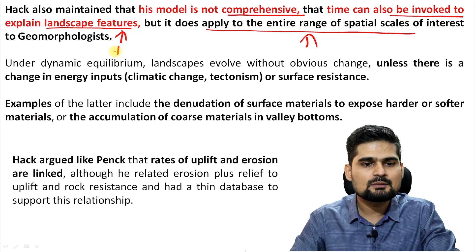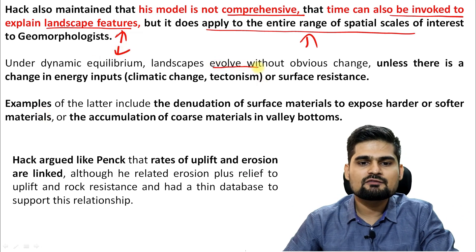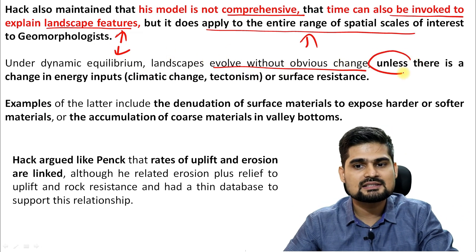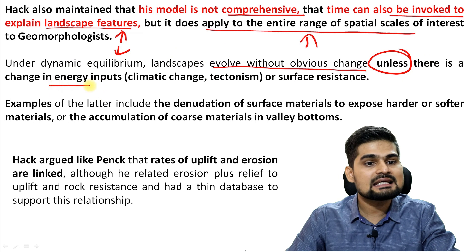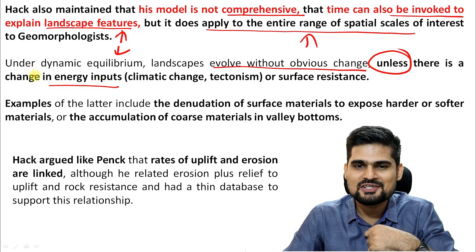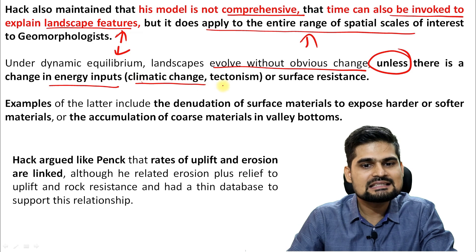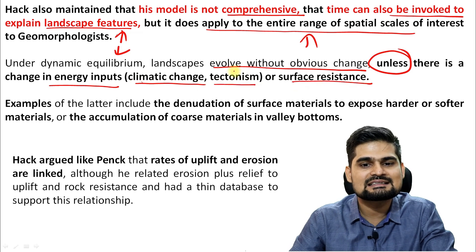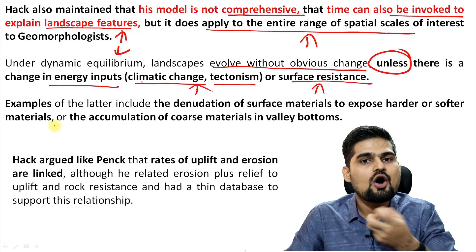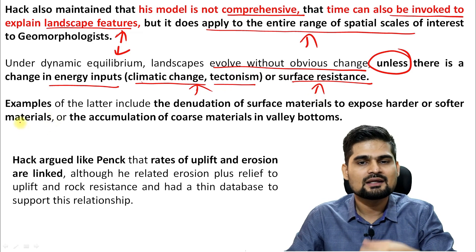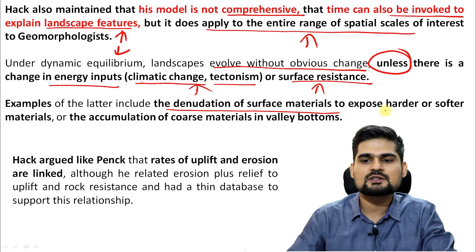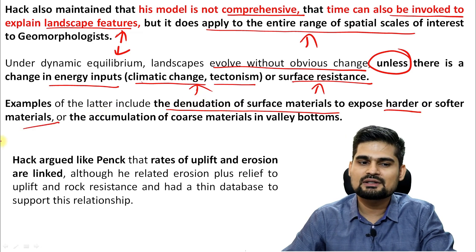Under dynamic equilibrium, landscapes evolve without obvious change, unless there is a change in energy inputs. The sources of this energy input are climatic change, tectonism, or surface resistance. Surface resistance includes the structure, rock hardness or softness, permeability, and all components of the rock material. Examples include the denudation of surface materials to expose harder or softer materials beneath.